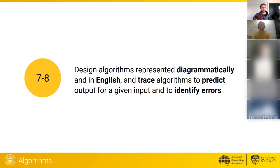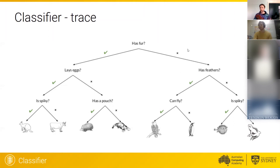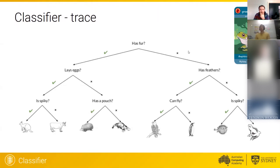Moving on to high school — or Years 7 and 8 — we design algorithms represented diagrammatically. Diagrammatically just means flowcharts, but flowcharts are an example of a diagram and we'll show another type you could use. The new thing introduced in Years 7 and 8 is tracing algorithms to predict output for a given input and identifying if there is an error or not. We've got a decision tree where we're going to decide what kind of animal we're looking at based on some questions that distinguish them from each other. We're going to look at a green tree frog and see if our algorithm can classify it correctly by tracing the algorithm.